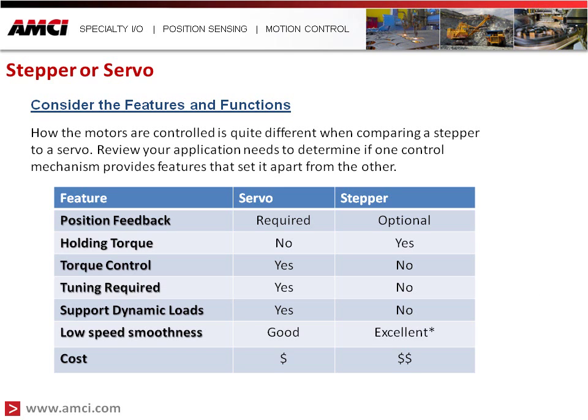We also want to look at features and functions. The motors are controlled quite differently when comparing a stepper to a servo — a stepper motor runs open loop, whereas a servo runs closed loop. When reviewing our application, we need to determine if one control mechanism provides features that set it apart. First and foremost is position feedback: because a servo runs closed loop, position feedback is a requirement. With a stepper, although it's open loop, encoder feedback can be added though it's not required. Regarding holding torque — with a servo motor there is no holding torque, whereas with a stepper we do have holding torque.